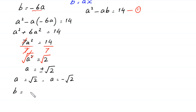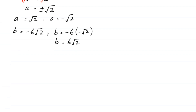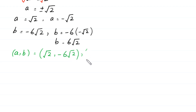To find the values of b, we put the values of a into b equals negative 6a. When a equals square root of 2: b equals negative 6 times square root of 2. When a equals negative square root of 2: b equals negative 6 times negative square root of 2 equals positive 6 square root of 2. So the first two solution pairs are (√2, −6√2) and (−√2, 6√2).